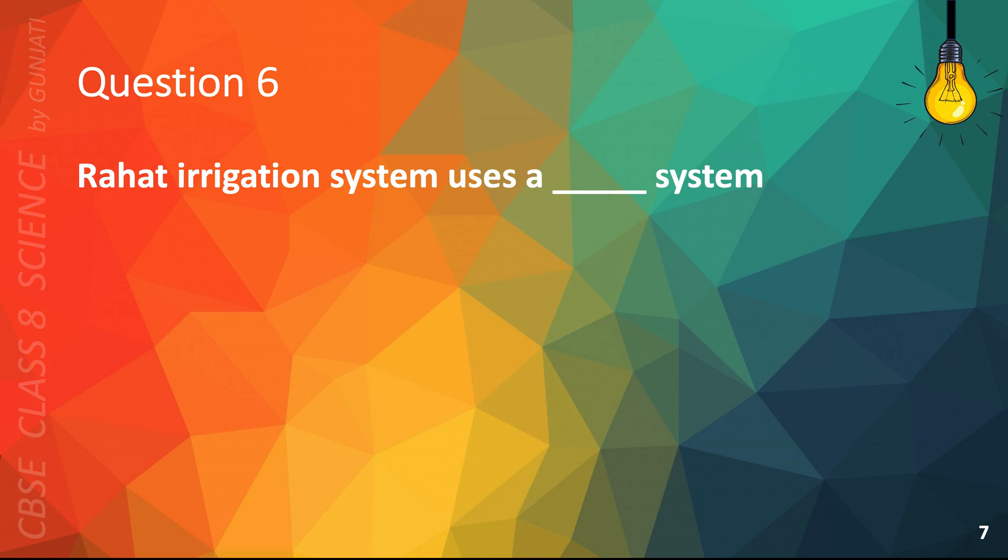Question 6. Rahat irrigation system uses blank system. A. Skeleton, B. Lever, C. Inclined plane, or D. Hammer. The correct answer is B. Lever.